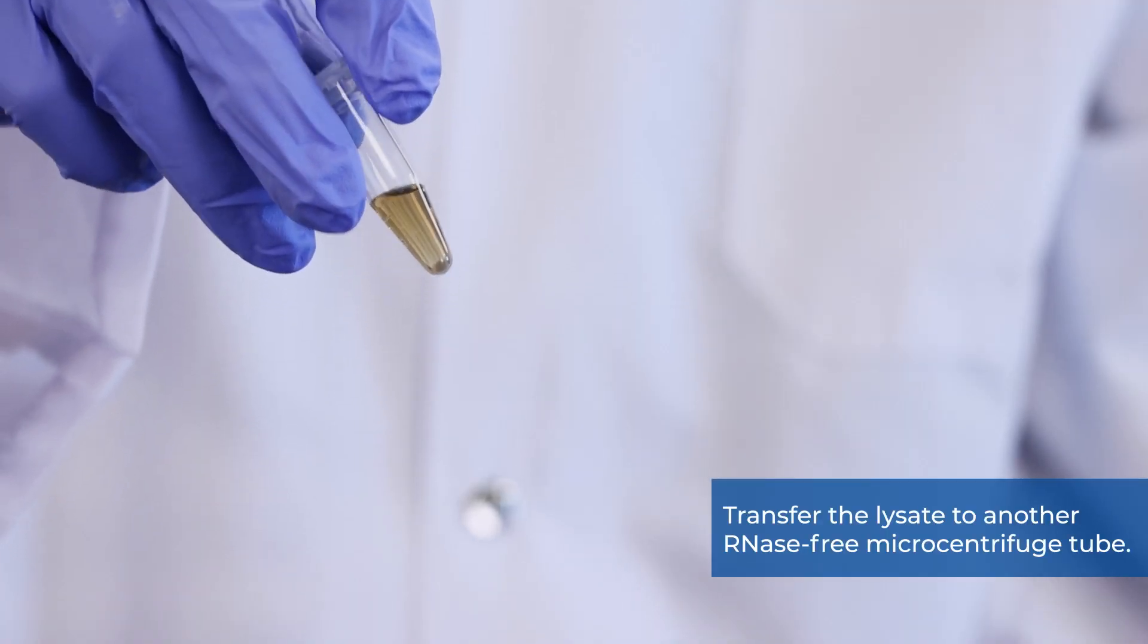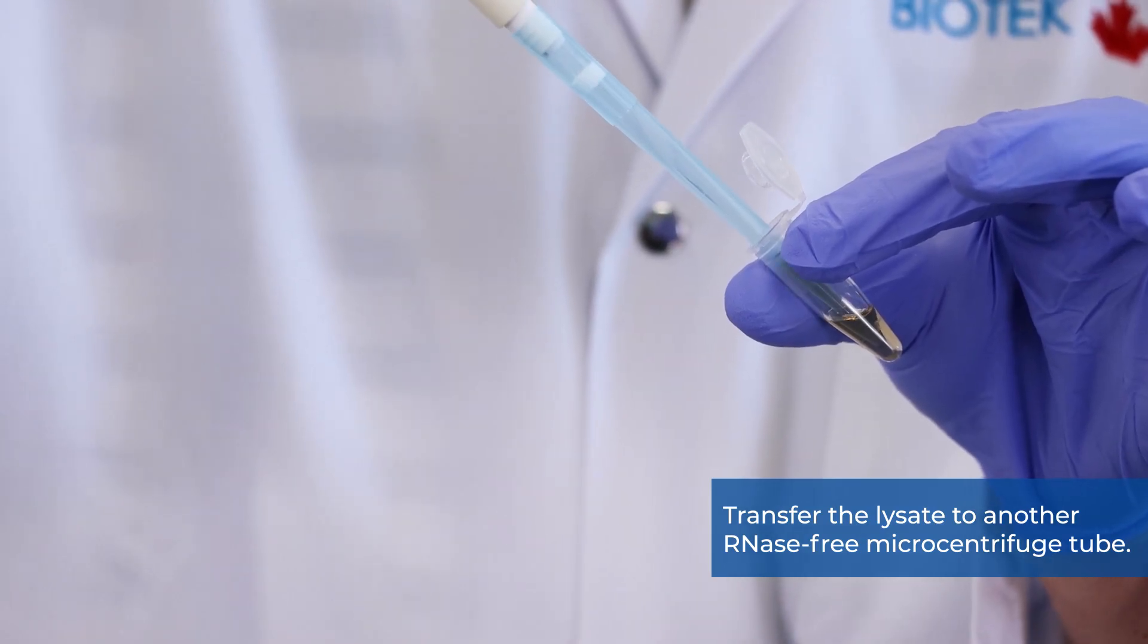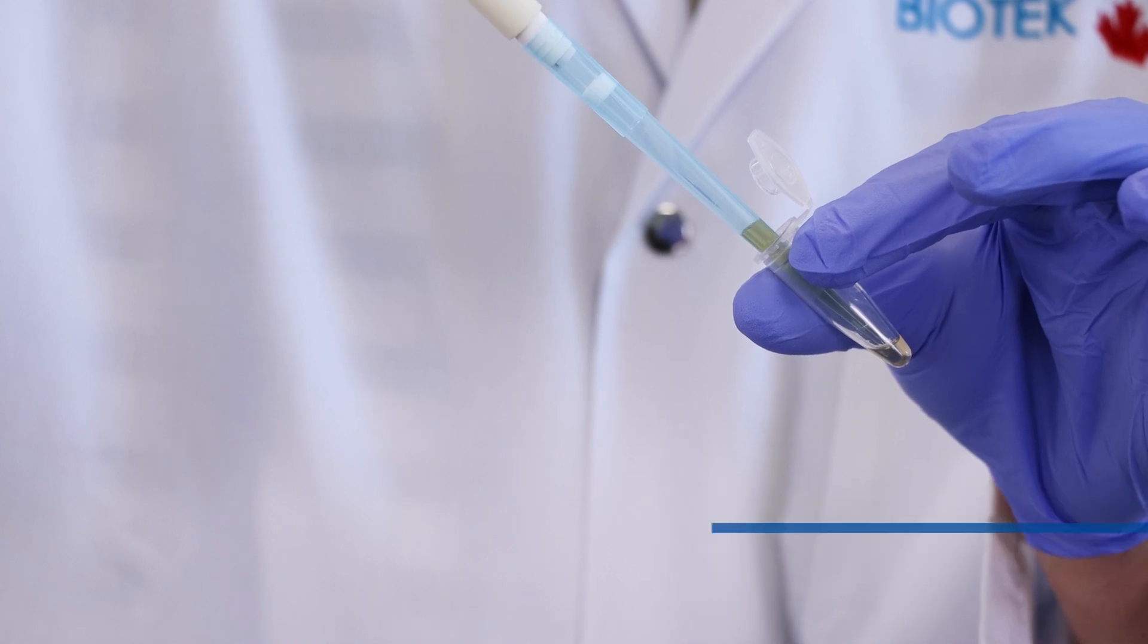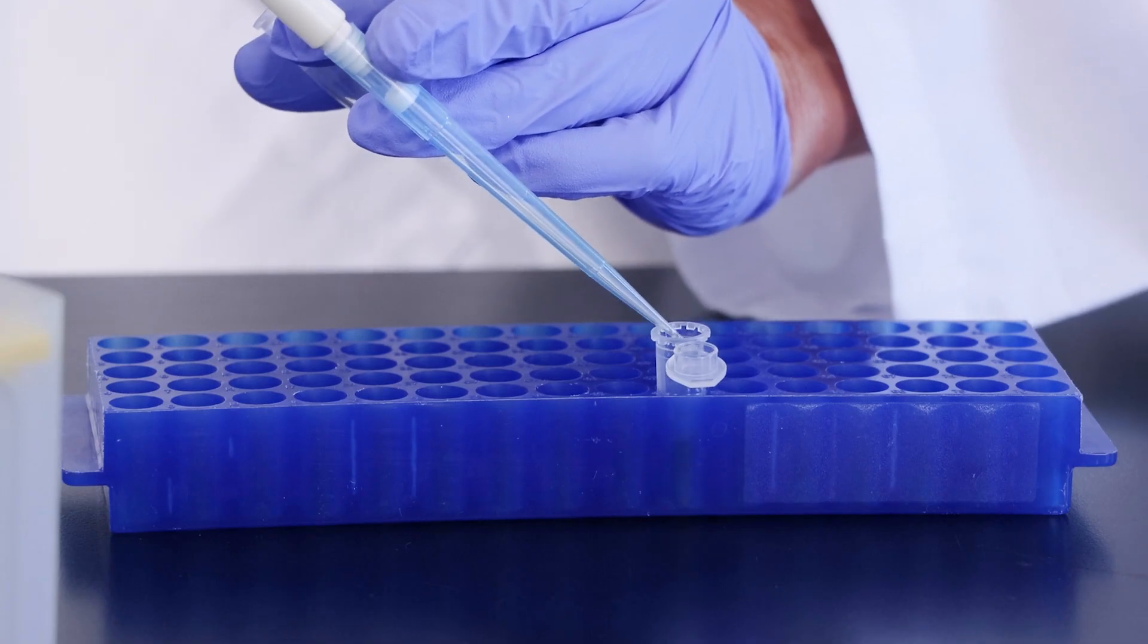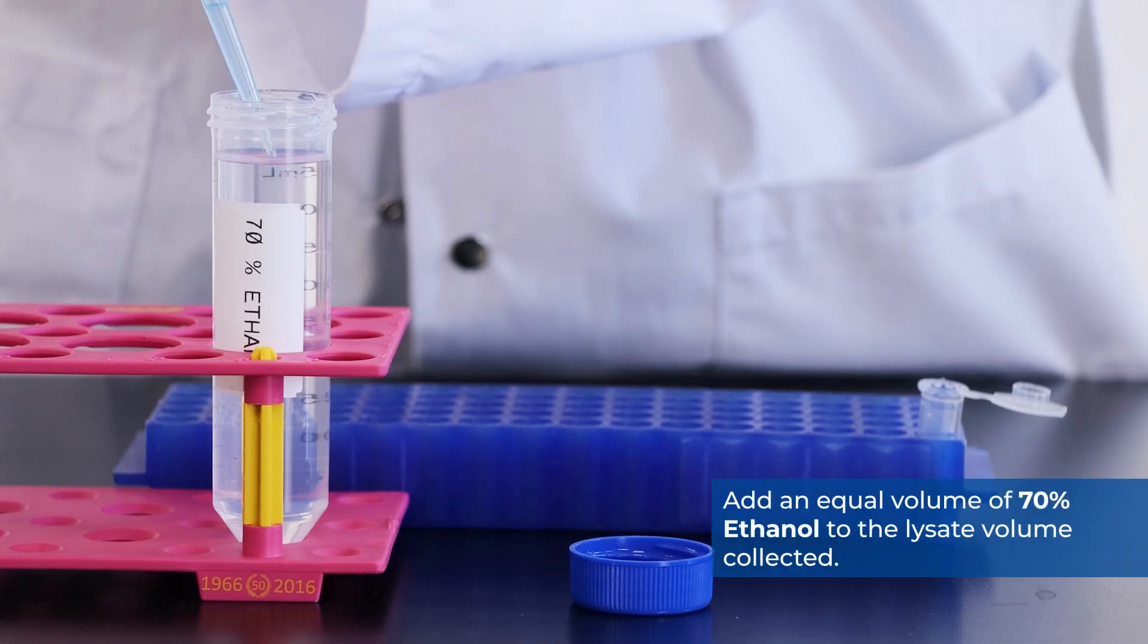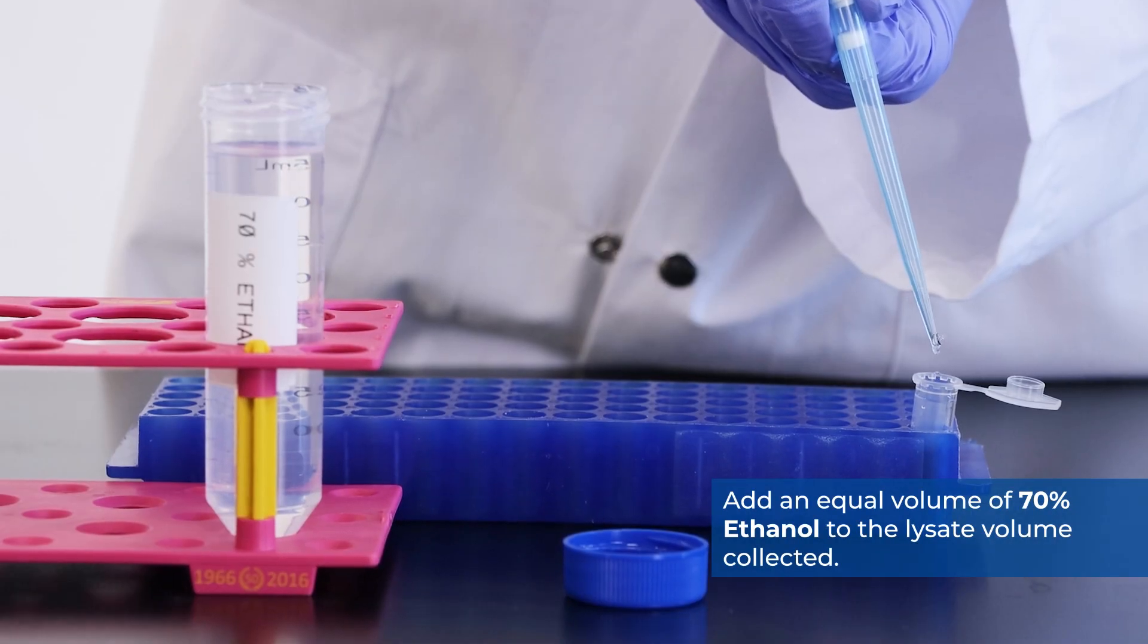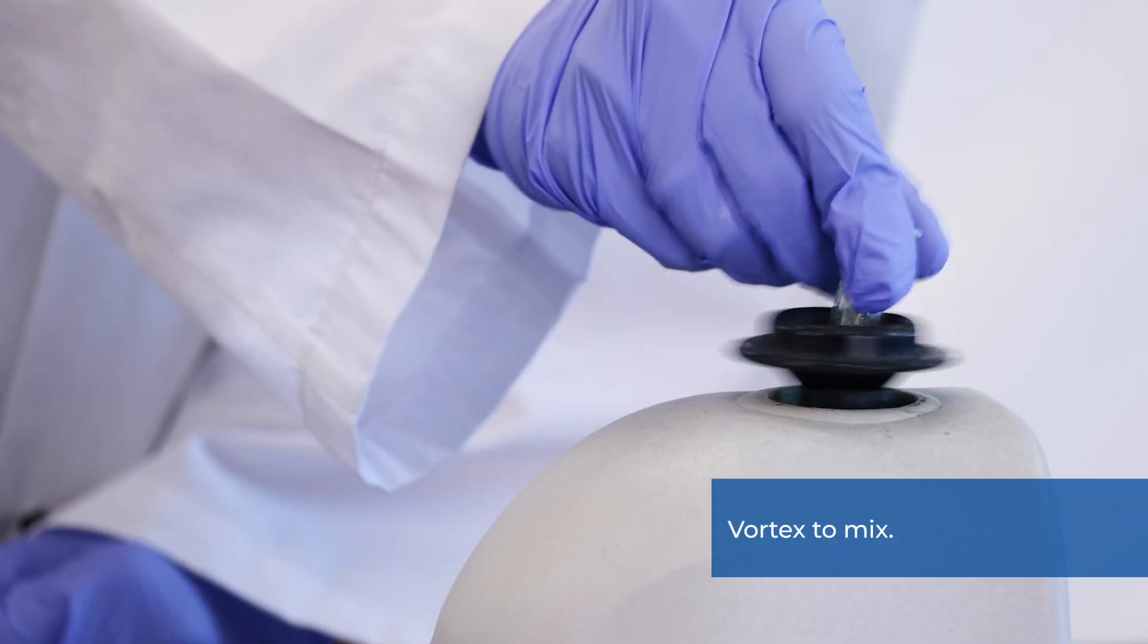Transfer the supernatant to another RNase-free microcentrifuge tube. Note the volume of the supernatant or lysate. Add an equal volume of 70% ethanol to the lysate volume collected. Vortex to mix.